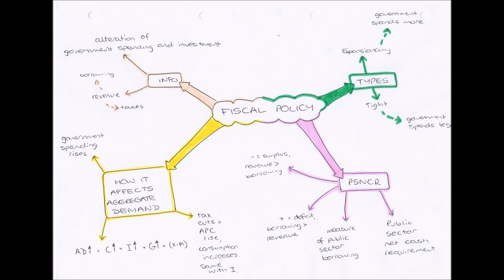But if there is a tight fiscal policy being run, then aggregate demand will decrease as government spending, consumption and investment all fall. Also, if we remember our definition of fiscal policy — the alteration of government spending, borrowing and taxes — the government doesn't just change its spending; it changes how much it borrows and its taxes too.